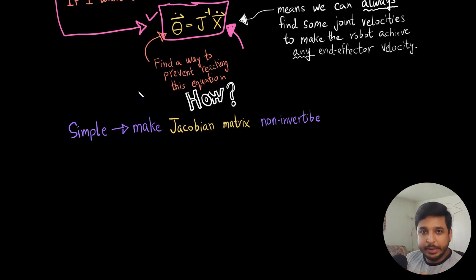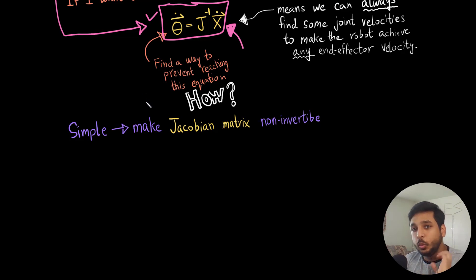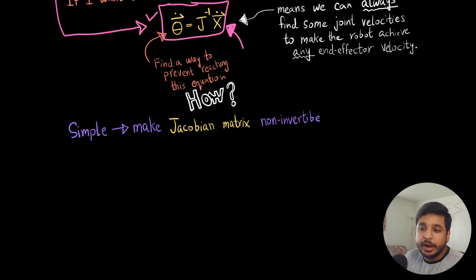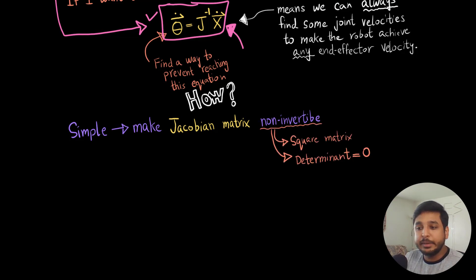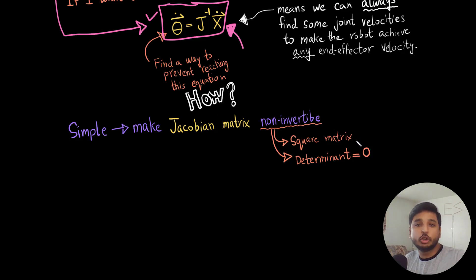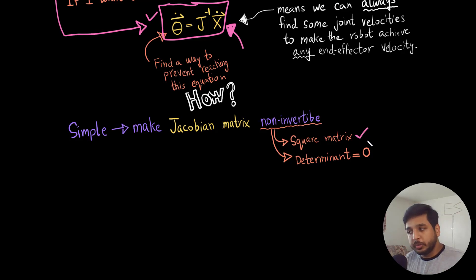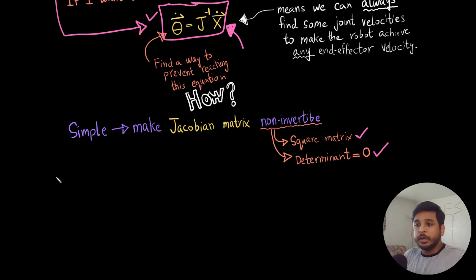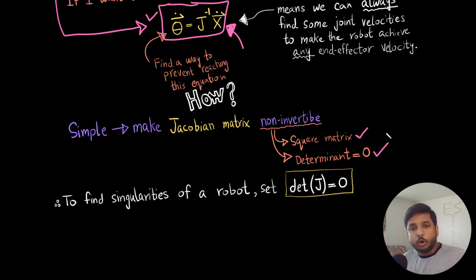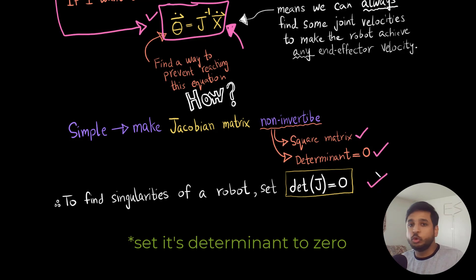To make a matrix non-invertible, it must satisfy two conditions: first, it must be a square matrix — and the Jacobian for a planar robot is generally a 3×3 matrix, so this condition is always satisfied. The second condition is we need to make its determinant zero. So the takeaway is: to find the singularities of the robot, we find the Jacobian and set its determinant equal to zero.